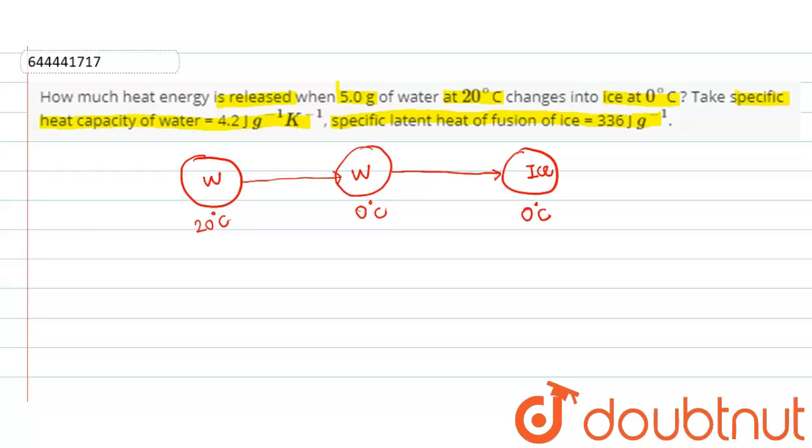So friends, when the water at 20 degree Celsius gets converted into water at 0 degree Celsius, it releases a heat Q that equals m into S into delta T, where S is the specific heat capacity of water and delta T is the change in temperature.